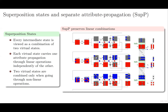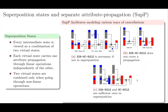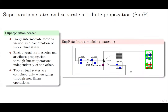Each virtual state carries one attribute propagation through linear operations, independently of the other. The two virtual states are combined only when going through the nonlinear operation. A direct advantage of this representation is the preservation of linear combinations. It opens up the possibility of new local collisions between or within the encryption and the key state, and it facilitates the modeling of various constellations and matching.